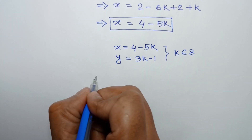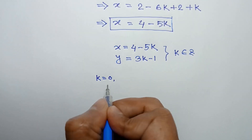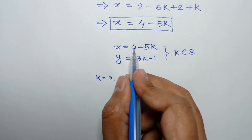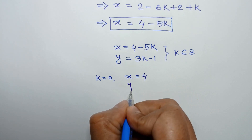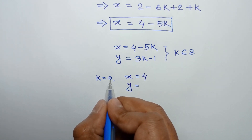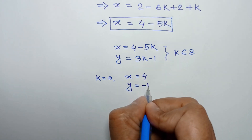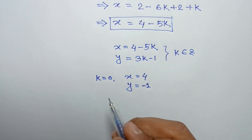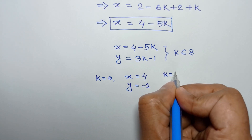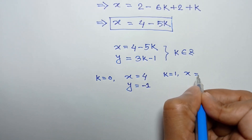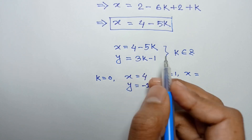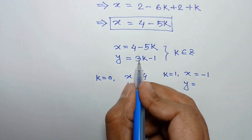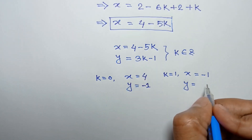For example, when k = 0: x = 4 - 5(0) = 4 and y = 0 - 1 = -1. This is an integer solution of the given equation. When k = 1: x = 4 - 5 = -1 and y = 3(1) - 1 = 2. This is another integer solution.